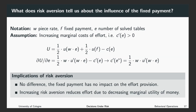Now let us write down the utility function of a subject. The utility is given by one half times the utility of W times E. W times E is the piece rate times the number of solved tables. So with one half probability, we will get a payment which is determined by the piece rate. With 50% probability, we just receive the fixed payment, so the utility is just U of F. And in all cases, we had to exert effort, so C of E.